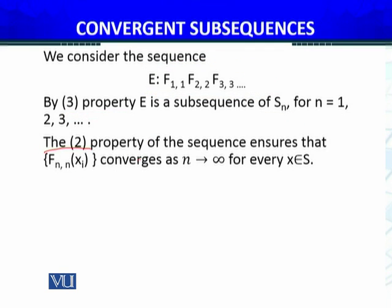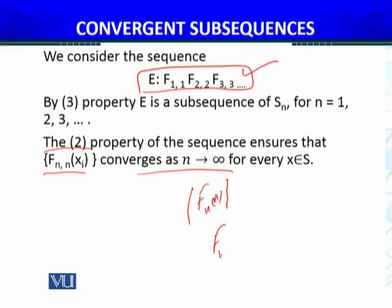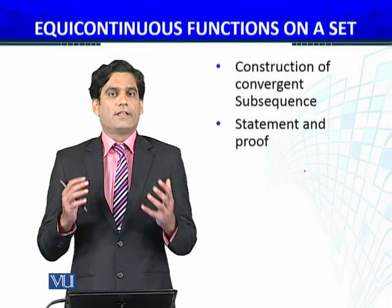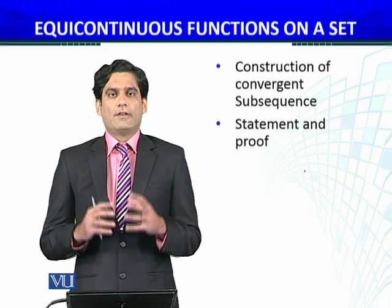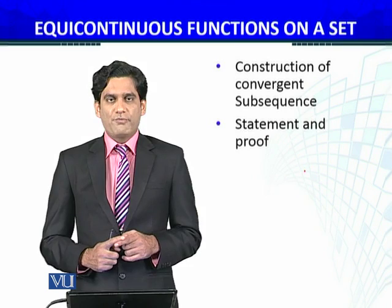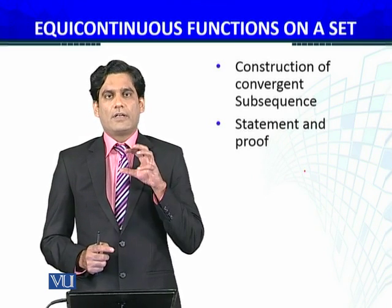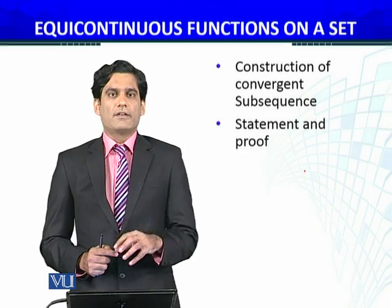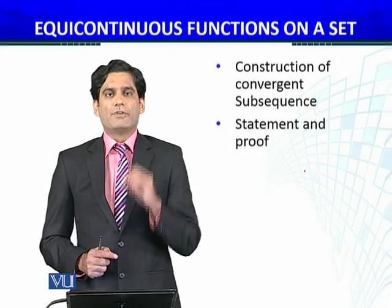The second property of the sequence ensures that {Fn,n(xi)} converges as n approaches infinity. So this is the required sequence of functions, {Fn(x)}, which has a subsequence {Fn,n(xi)}, and this subsequence converges as n approaches infinity for every x belongs to S. This is what we had to construct. We are given a sequence of functions which is pointwise bounded and defined on a countable set, and we have constructed a subsequence of that sequence of functions which is convergent.